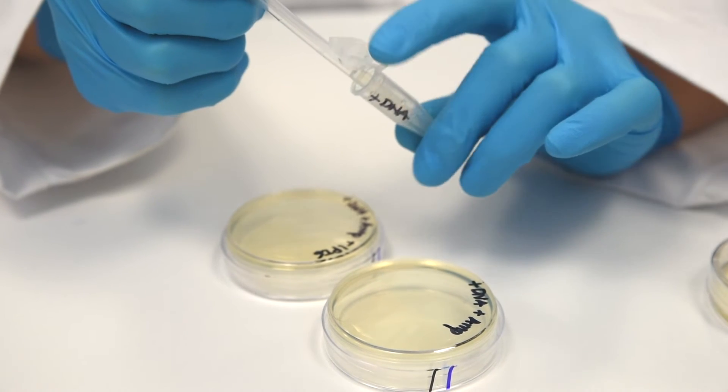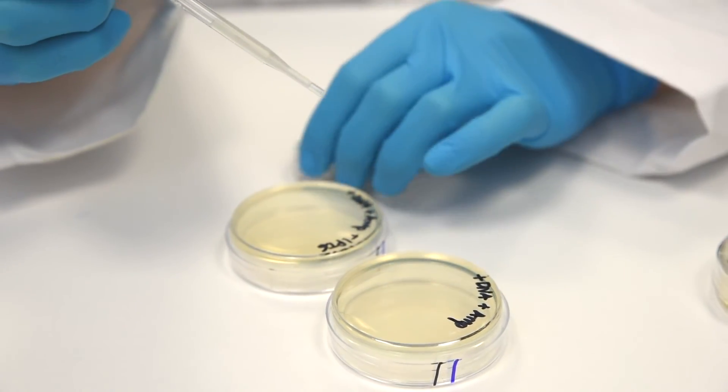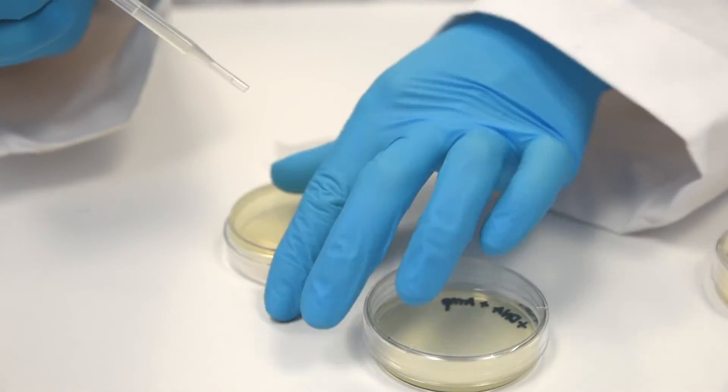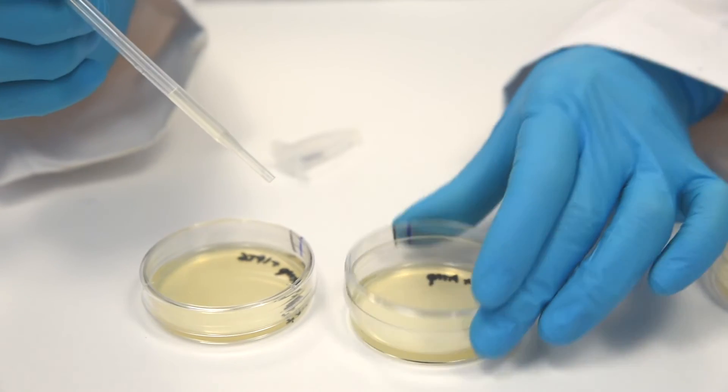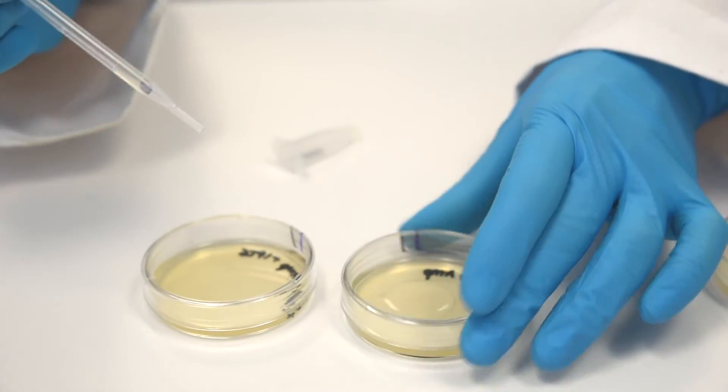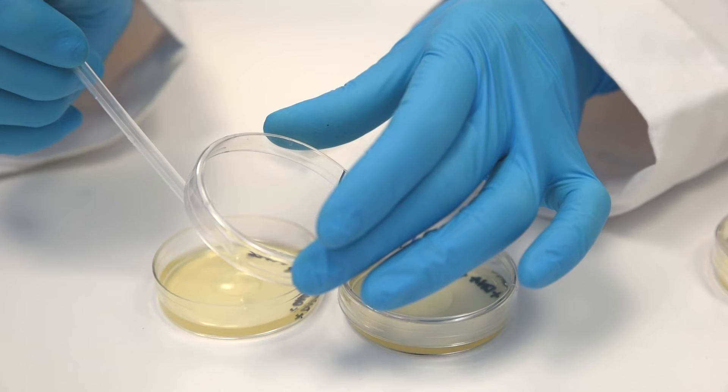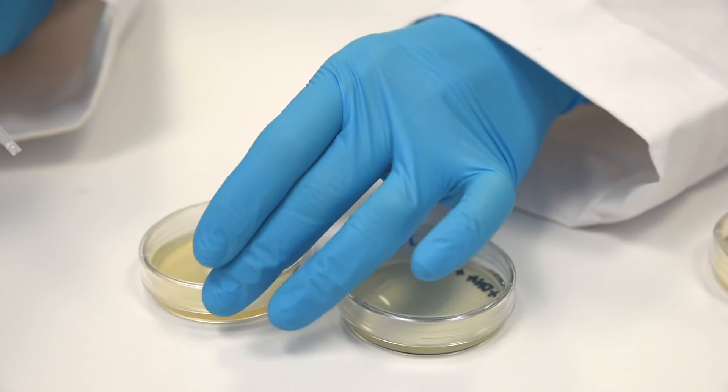Step 14. Using a new sterile 1 ml pipette, transfer 250 microliters of the recovered cells from the tube labeled plus DNA to the middle of the plus DNA and the plus DNA plus amp plus IPTG plates.